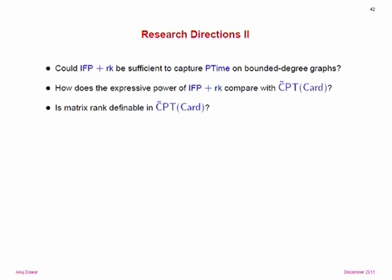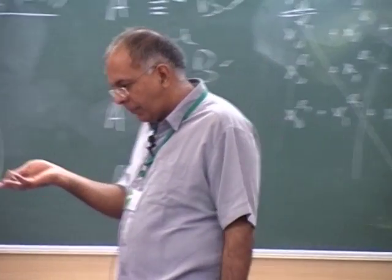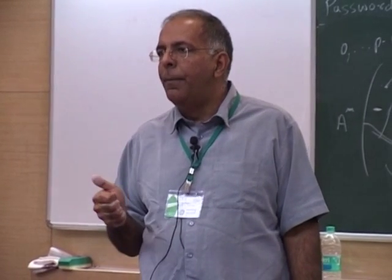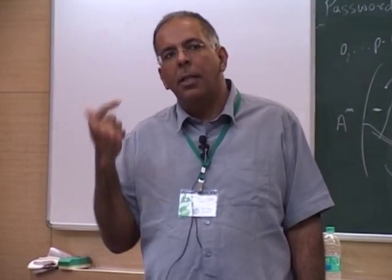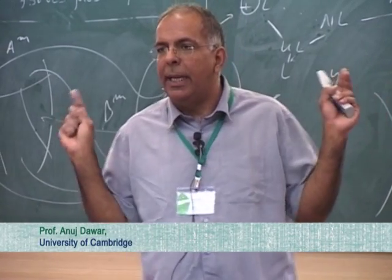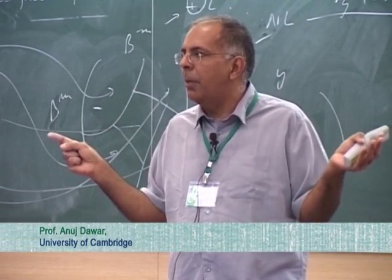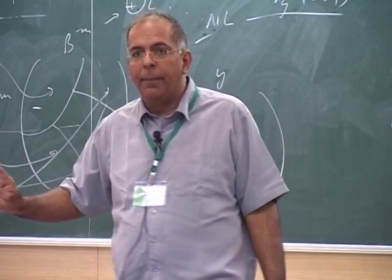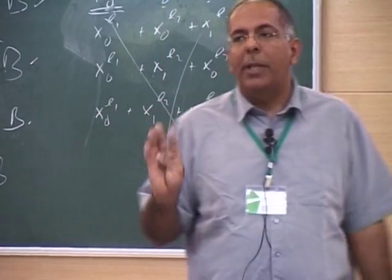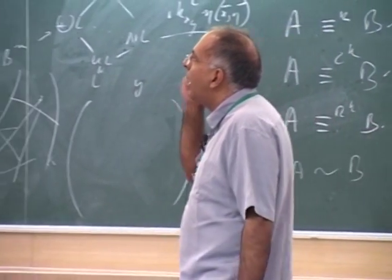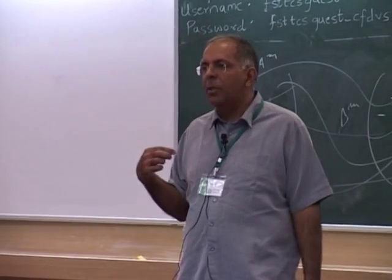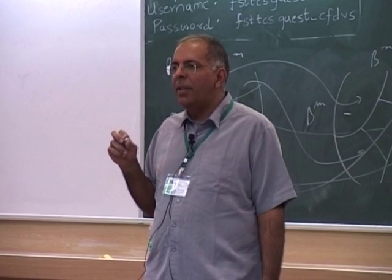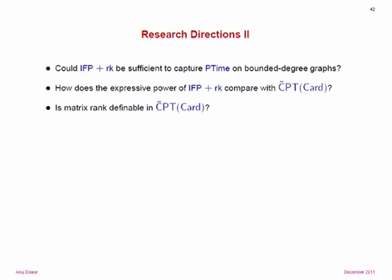Take any concrete NP-complete problem, say three-colorability, and prove it's not in fixed-point with rank — that would be nice. Bounded-degree graphs are an interesting case: we know there is a polynomial-time isomorphism test and polynomial-time canonical labeling, so in principle there is a logic for P in the abstract sense. But we know fixed-point with counting is not enough, because the Cypher-Ehrmann construction can all be done with bounded degree. Is fixed-point with rank enough? That would mean looking at those canonical labeling algorithms and trying to express them in fixed-point with rank — they're enormously complicated.